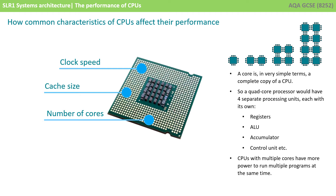Finally, we need to think about the number of cores. In very simple terms, a core is a complete copy of the CPU. So a quad core processor would have four separate processing units, each with its own set of registers, ALU, accumulators, control unit, etc. This means a CPU with more than one core is physically able to carry out more than one fetch-execute cycle at a time and has the potential to run multiple programs at once. Note, however, that doubling the number of cores doesn't directly lead to a doubling of the speed and efficiency of the processor.